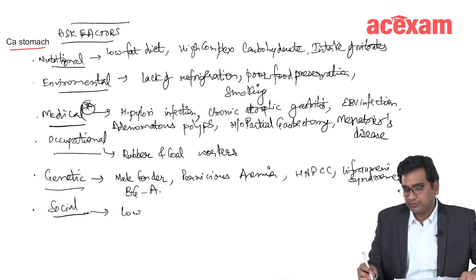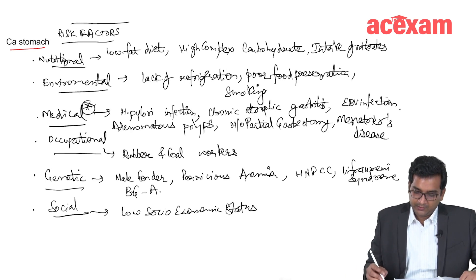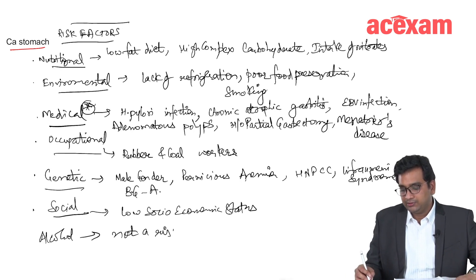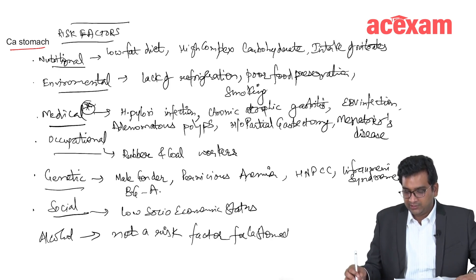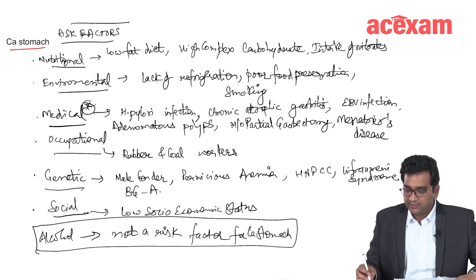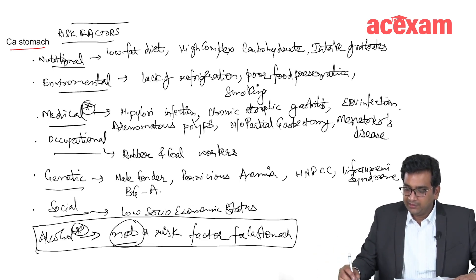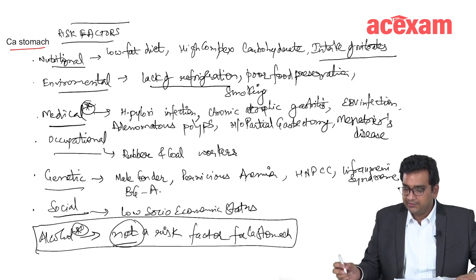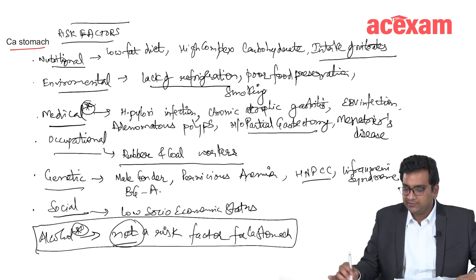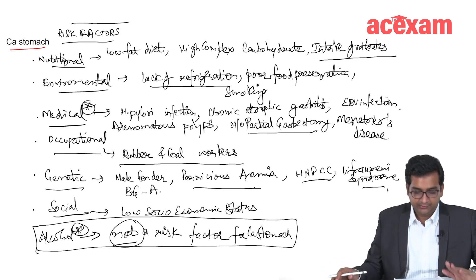Social factor is low socioeconomic status. Importantly, alcohol is NOT a risk factor for carcinoma stomach. Key points to remember: intake of nitrates, lack of refrigeration, history of partial gastrectomy, rubber and coal workers, HNPCC, Lynch syndrome, and pernicious anemia.